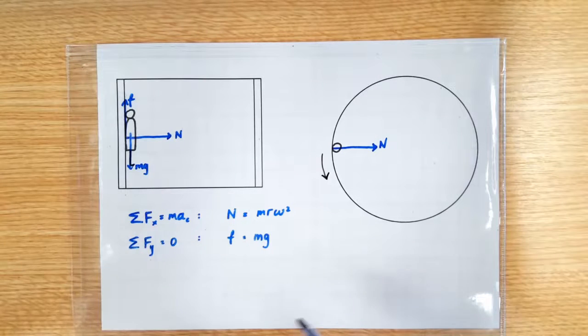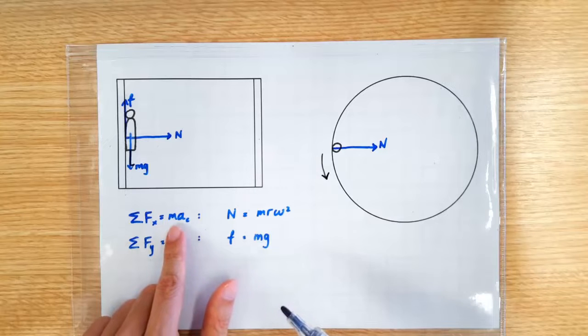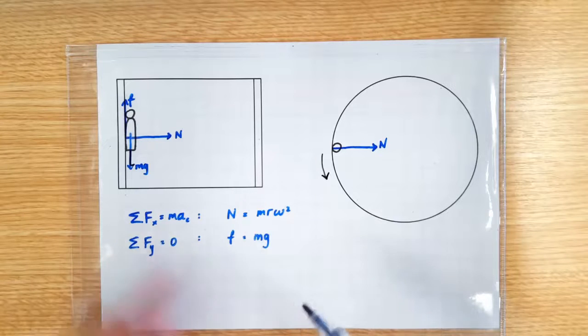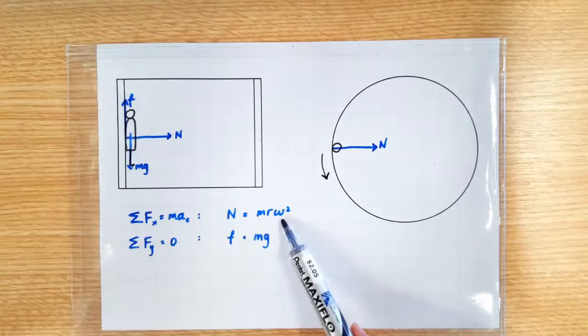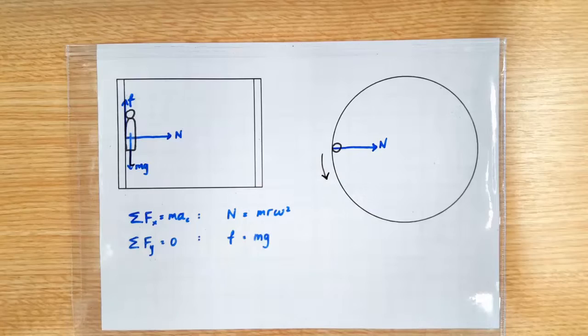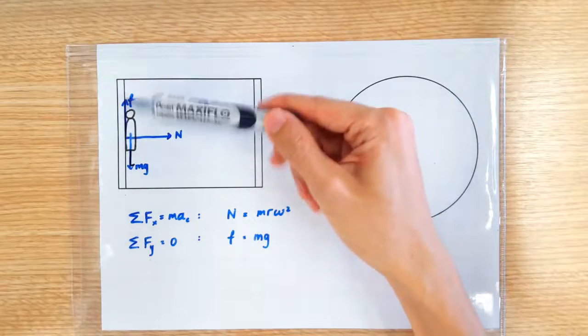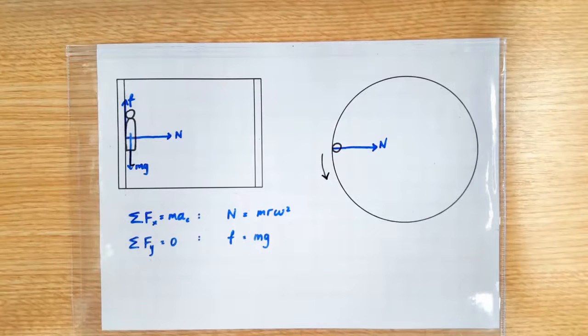Let's form those two equations. So horizontally, we know the net force is the required centripetal force. So the normal contact force is providing the required centripetal force, which we write as mR omega squared. Vertically, the net force should be zero. So the upward friction must be equals to the downward weight.